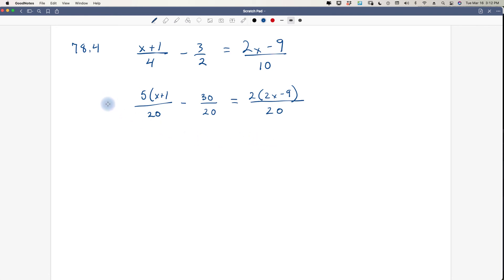Now we're going to multiply every term by 20. 20 times this, 20 times that, and 20 times that. And you just put it over 1. That's how you do that. So then this cancels out, this cancels out, and this cancels out. So you are left with 5 times x plus 1 minus 30 equals 2 times 2x minus 9.